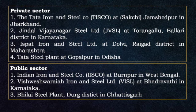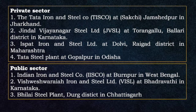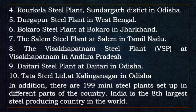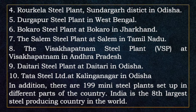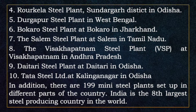Iron and steel industries in the public sector, owned by the government of India: 1. Indian Iron and Steel Company at Burnpur in West Bengal. 2. Visveshwaraya Iron and Steel Limited at Bhadravati in Karnataka. 3. Bhilai Steel Plant, Durg District in Chhattisgarh. 4. Rourkela Steel Plant, Sundargarh District in Odisha. 5. Durgapur Steel Plant. 6. Bokaro Steel Plant at Bokaro in Jharkhand. 7. Salem Steel Plant at Salem in Tamil Nadu. 8. Visakhapatnam Steel Plant at Visakhapatnam. 9. Daitari Steel Plant.